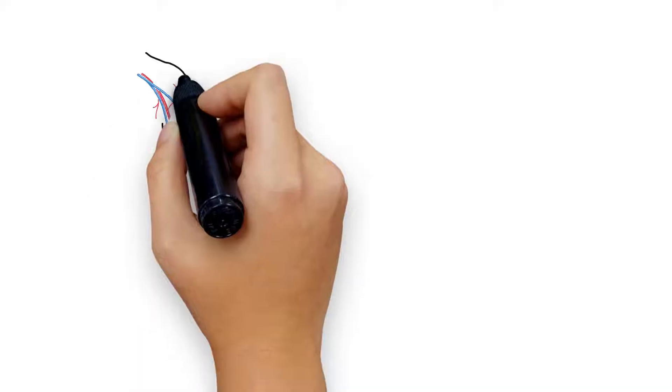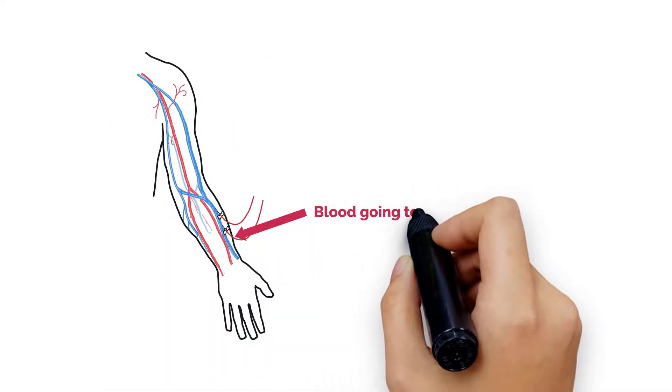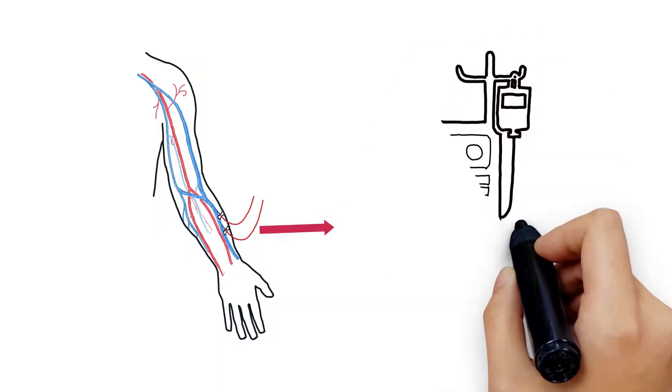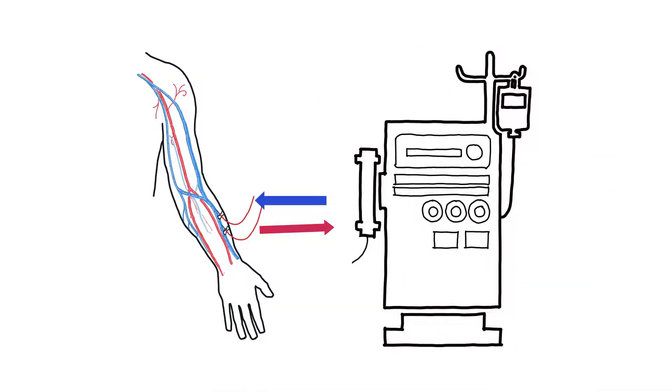The AVF accommodates two needle insertions, one for drawing blood to be filtered and another for returning the clean blood back into the body.